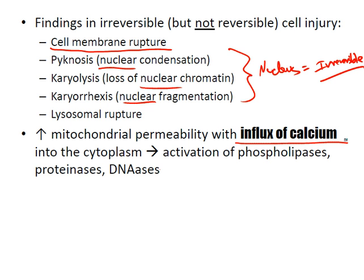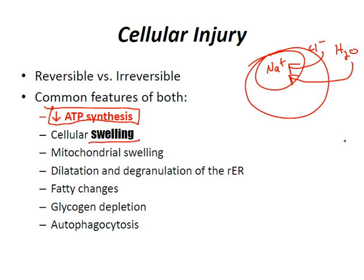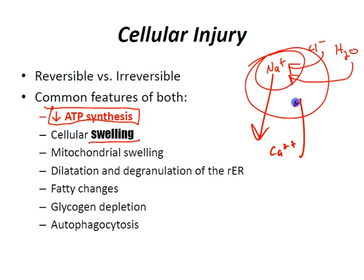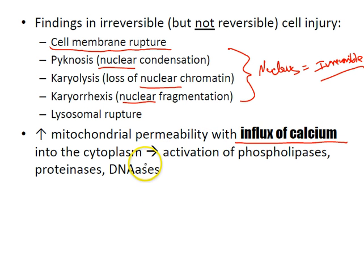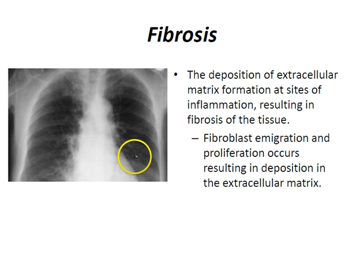Once sodium builds up in the cell long enough, it eventually exchanges with calcium via the sodium-calcium exchanger. Once calcium gets into cells, it activates phospholipases, proteinases, and DNAases, which leads us into fibrosis.